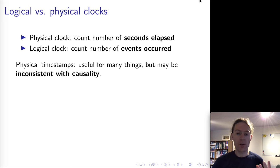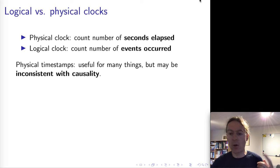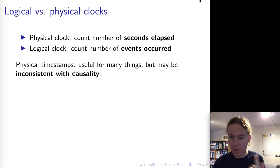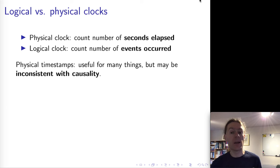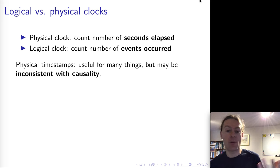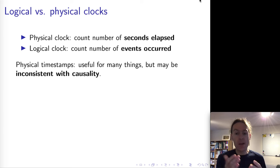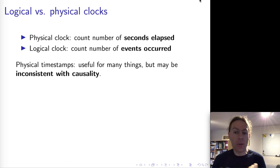Logical clocks are sort of clocks, but not clocks in the sense of measuring how long it's been — measuring how far the earth has turned around the sun, or rotated around its own axis. That's all physical time. In logical time, we're not actually interested in how many seconds have elapsed. Instead, what we're interested in is how many events have occurred. Logical timestamps are essentially just counters that we increment every time something happens. They do move forwards, but they don't have a direct relationship to physical time.